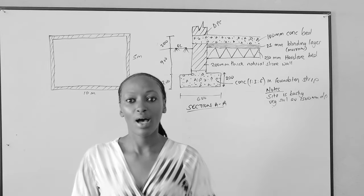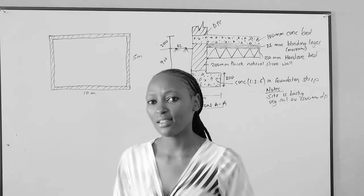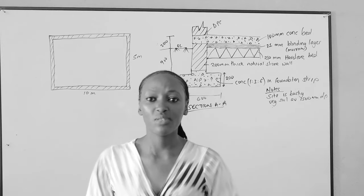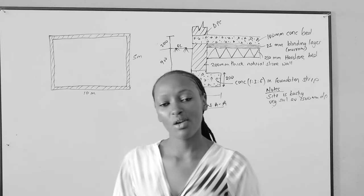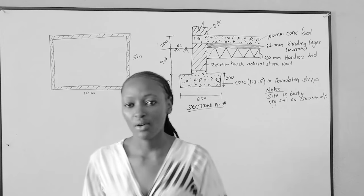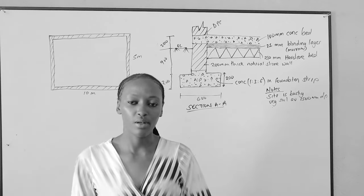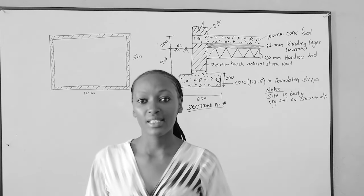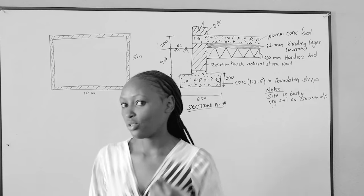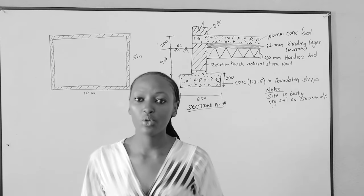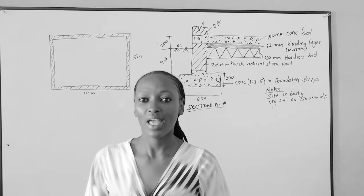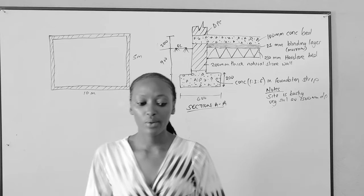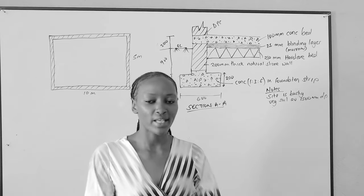So why do we take off? Let's start there. Why do we do taking off? It's because taking off is the first process of coming up with a bill of quantities. Taking off, in other words, is called measurement. It helps you measure every element of a building with enough focus.